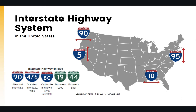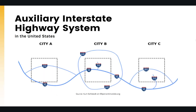Different shields of the Interstate Highway System include the standard interstate shield, a wide standard shield for local or state interstates, and business routes specified in green shields. Auxiliary interstate highway systems are designated with three-digit numbers when interstate highways pass through or around cities — for example, I-210, I-610, or I-810.